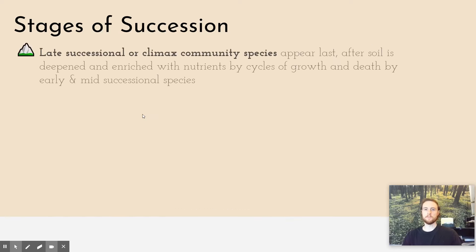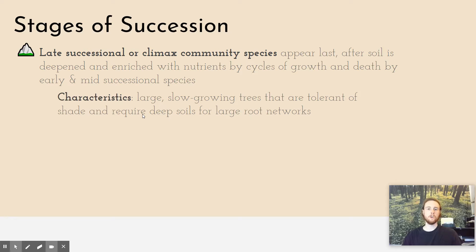Late-successional species, as their name implies, are the last species to colonize an area. We also call these members of a climax community, because a climax is at the end of the transition. They start growing after the soil has been deepened and enriched further by the early and mid-successional species dying and having their biomass and nutrients added to the soil. These late-successional species are large, slow-growing trees that are tolerant of shade. They can develop in the shade of mid-successional species, and they need deep, nutrient-rich soil to anchor their roots.